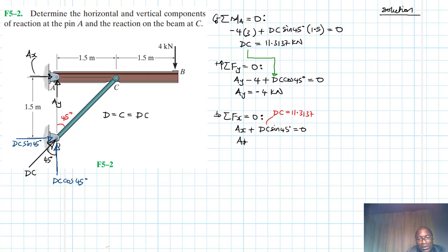AX, therefore, is just going to be equal to minus 11.3137 sin 45. So this gives us AX is equal to 8 kilo newtons.